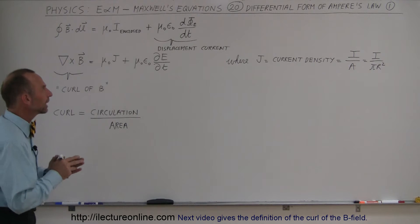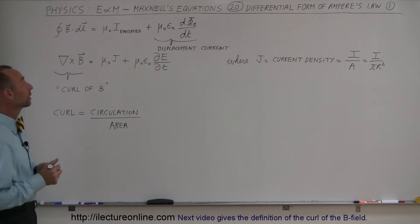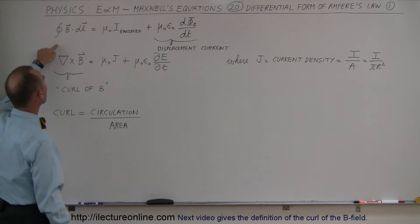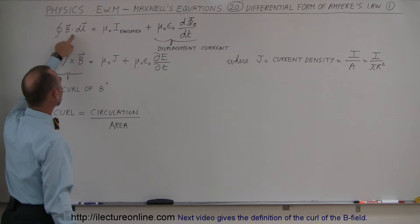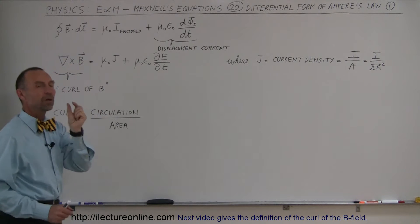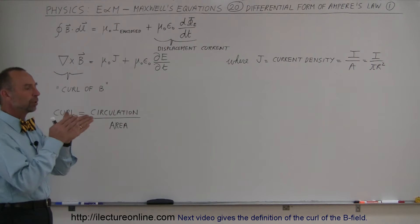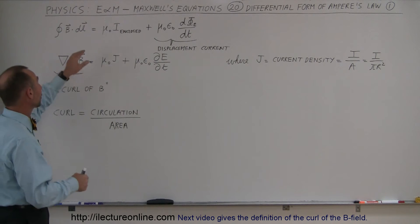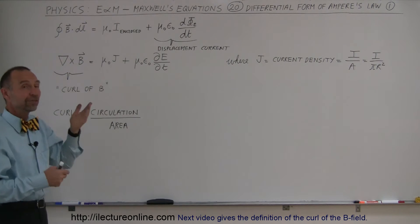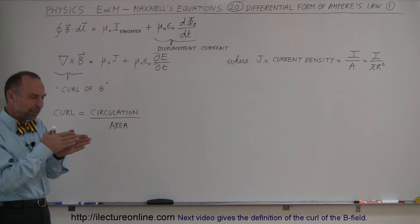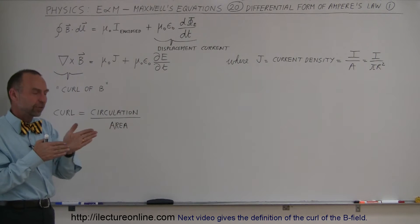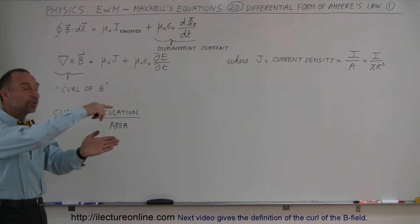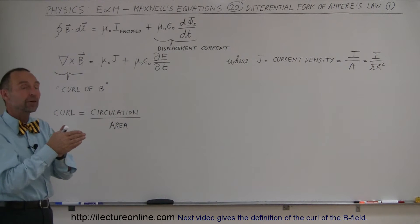Let's take a look at the integral form to remind ourselves what that is. This is what we call the integral form — the line integral of the magnetic field dotted with dl. dl is a small line segment, so we multiply the magnetic field times the line segment, giving B times dl times the cosine of the angle between them, which is typically zero if the B field is directed the same way as the path we're integrating around.